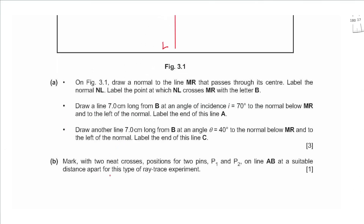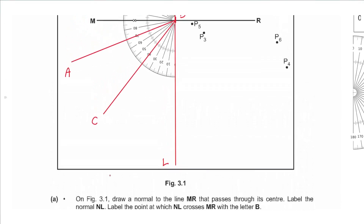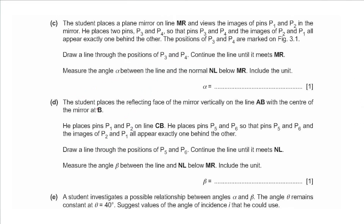Part b says mark with two neat crosses the positions of pins P1 and P2 on line AB, at a suitable distance apart — at least 5 cm for this type of ray trace experiment. We place one cross near the end and one near the start of the line, labeling them P1 and P2.